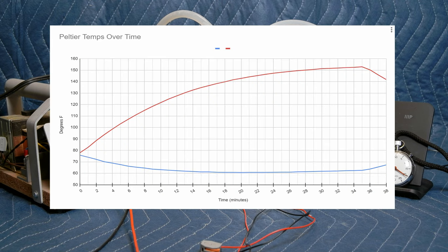Ultimately, we saw a delta T, a change in temperature, of about 90 degrees. That's pretty impressive to me.